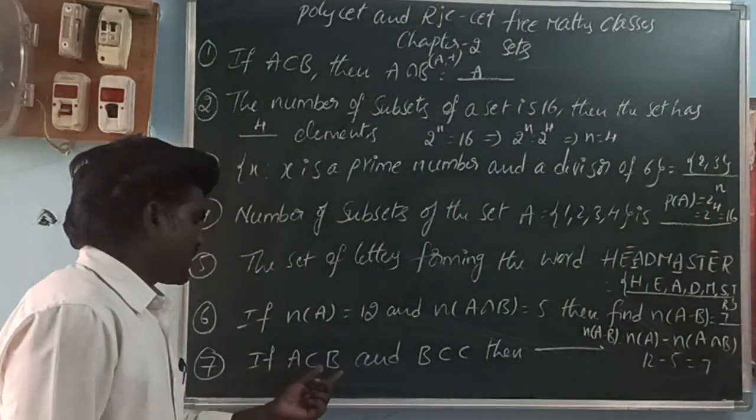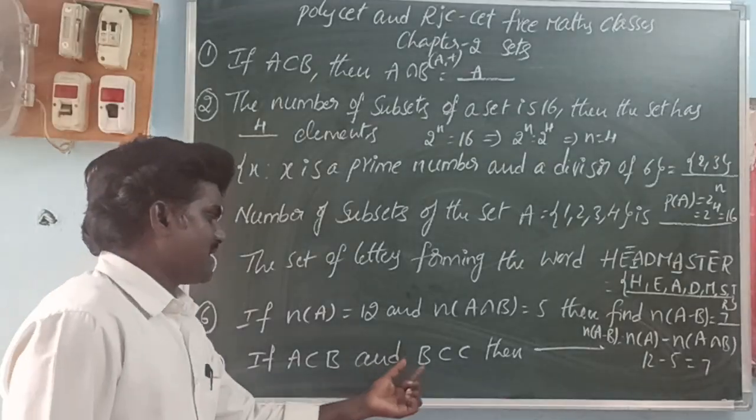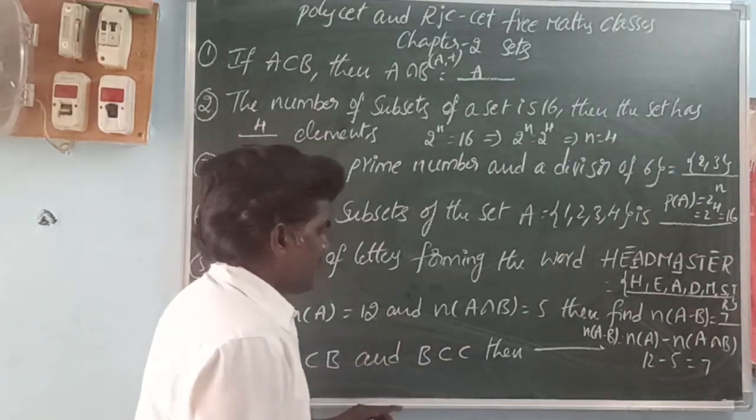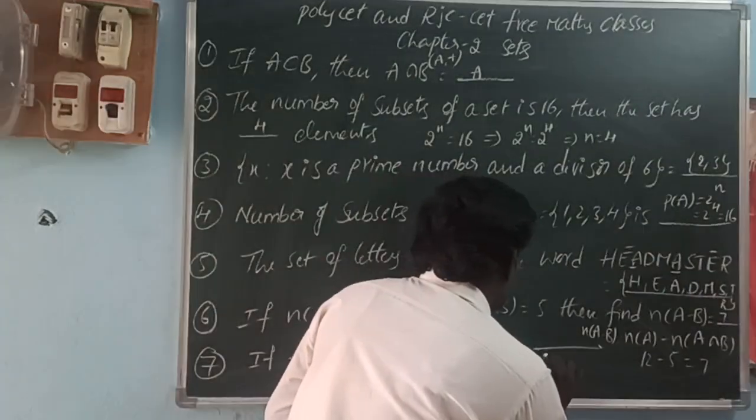Next: if A is a subset of B and B is a subset of C, then A is a subset of C.